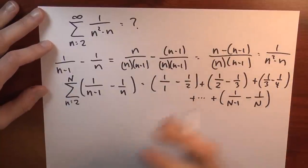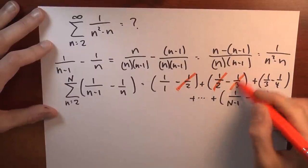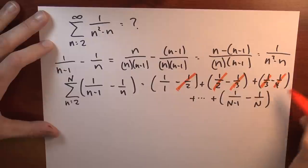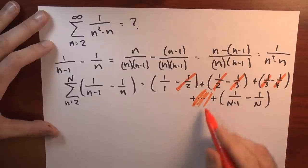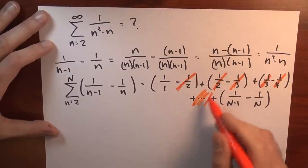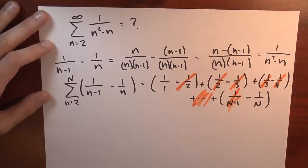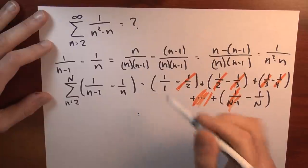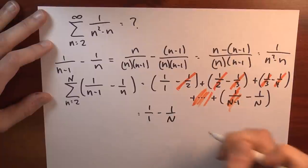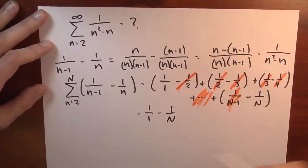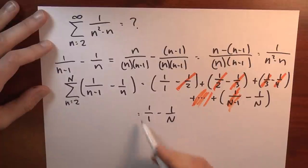Lots and lots of stuff cancels — this is exactly what is meant by telescoping. The minus one-half cancels with the one-half, the minus one-third cancels with the one-third, the minus one-fourth cancels something in the middle. Everything in the middle dies. There will be a 1 over N minus 1 term with a negative sign that cancels as well. The only things that survive are the initial term 1 over 1 and the last term minus 1 over N. So the sum from n equals 2 to big N equals 1 minus 1 over N.